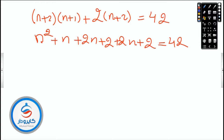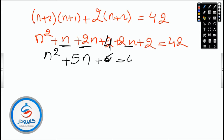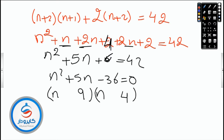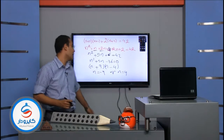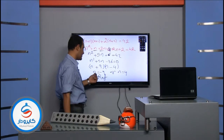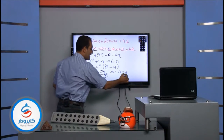Collecting like terms: n squared, then n plus two n gives three n, plus two, plus four — ah, five n plus two equals forty-two. So n squared plus five n plus two equals forty-two. Rearranging: n squared plus five n minus forty equals zero. Wait — this is: n squared plus five n plus six equals forty-two, so n squared plus five n minus thirty-six equals zero. Factorizing: n equals negative nine or n equals four.